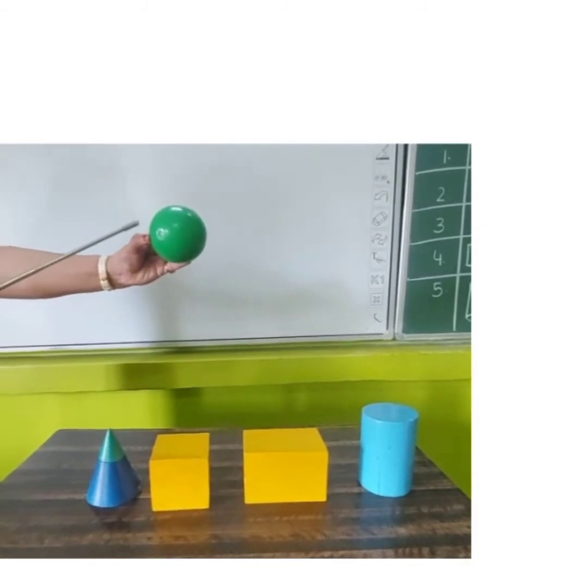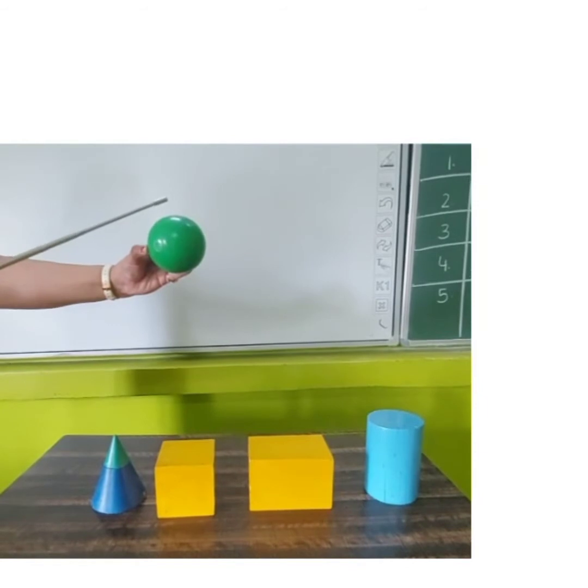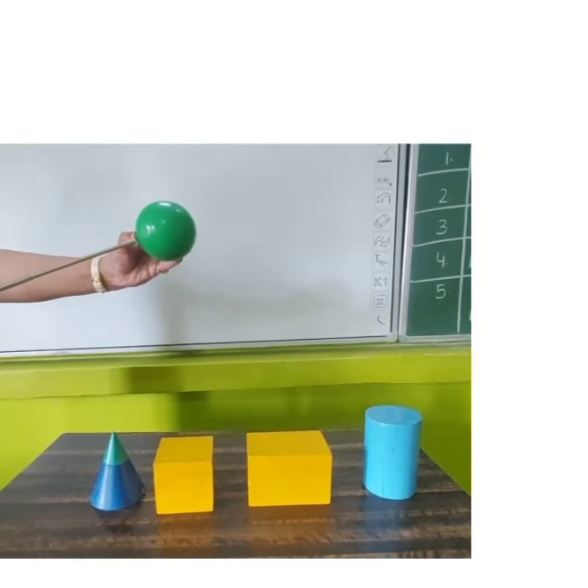Our first 3D shape is a sphere. A sphere has one curved face, zero sides and zero corners.